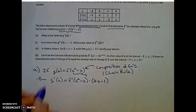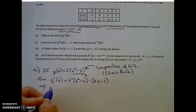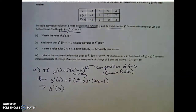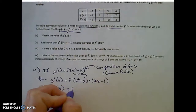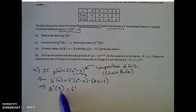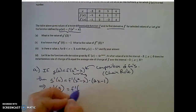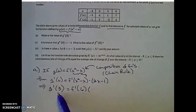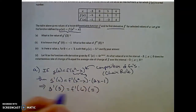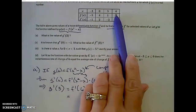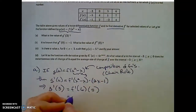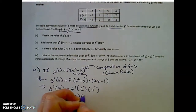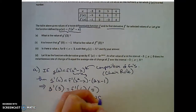So there's my chain rule. That implies that g prime of 3 will equal f prime of — plugging in 3 as my input — 3 squared is 9, minus 3, which is 6, times 2 times 3 is 6, minus 1 is 5. Now I have to go to my table of values: f prime of 6. For x equals 6, f prime is equal to 4, times 5, and we arrive at 20.